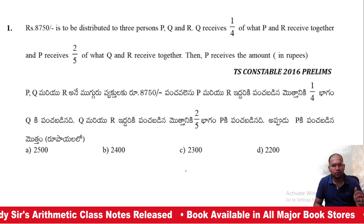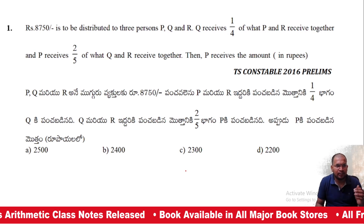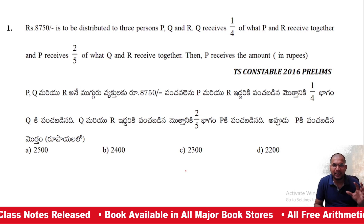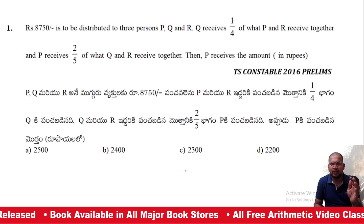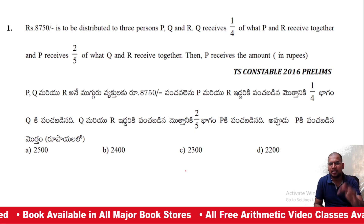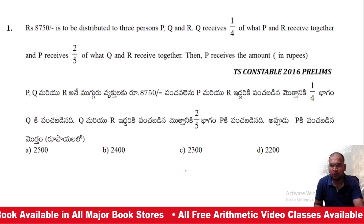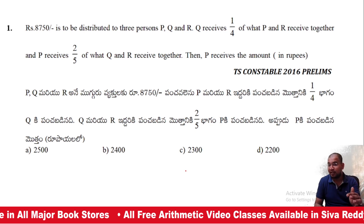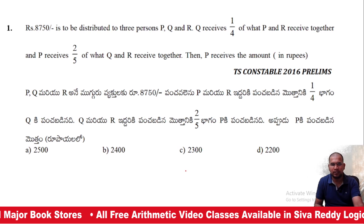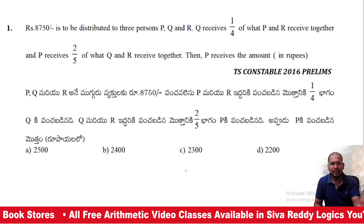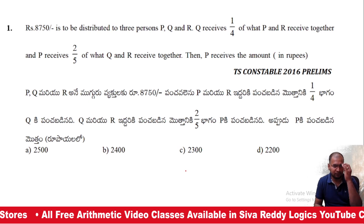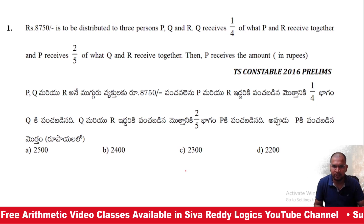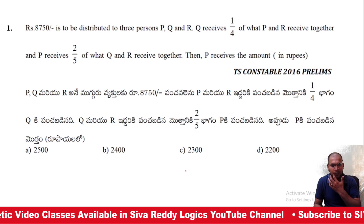First question: P, Q, R. Q receives 1/4th of what P and R receive together. And P receives 2/5th of what Q and R receive together. Then how much does P receive?